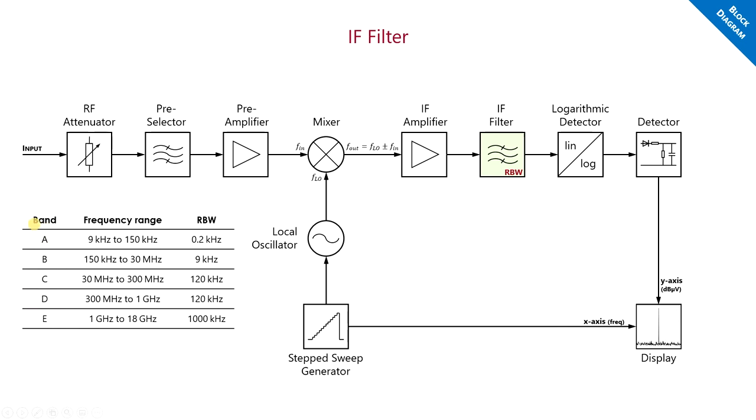So, for each of the bands, different settings must be chosen according to the standard. Luckily, most EMI receivers have those settings automatically predefined. But how is the shape of our resolution bandwidth filter defined?